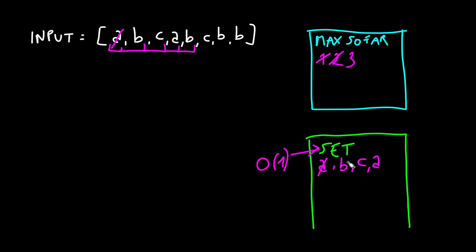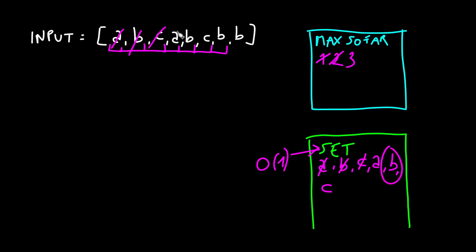'b' is in the set, so we pull from the beginning of the sliding window until 'b' is removed. In this case it's the first element, so we remove it from the set, add 'b' again, and the max is still three. For the next case, 'b' is in the set again, so we start pulling from the beginning — we remove 'a', but 'b' is still in the set, so we keep pulling and remove 'b'. We check again: 'b' is not in the set, so we add it. The max so far is two, which is smaller than three, so it remains unchanged.